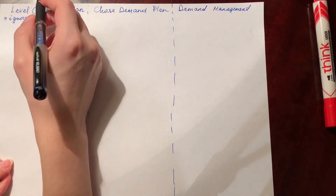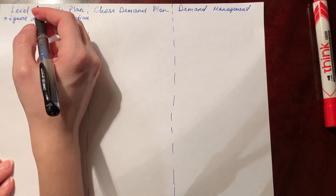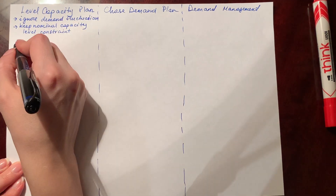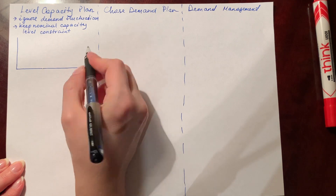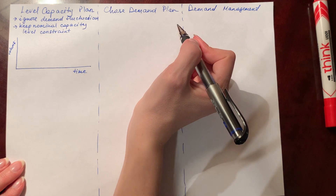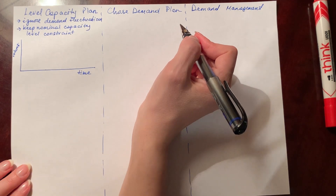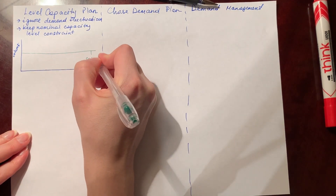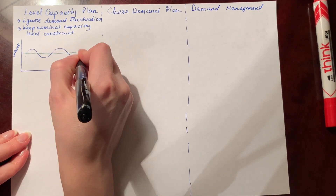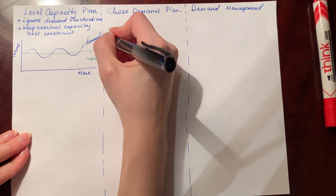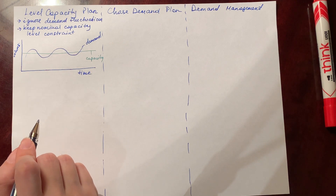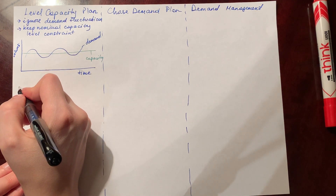The first approach or strategy is the level capacity plan. It tells us to ignore the demand fluctuations and keep nominal capacity level constant with the same number of staff throughout the year, and same processes and same equipment. In the graph, the horizontal axis is time and the vertical axis is volume. Demand is shown in blue ink and fluctuates throughout the year, while capacity shown in green remains constant.